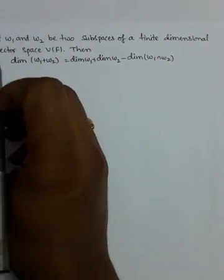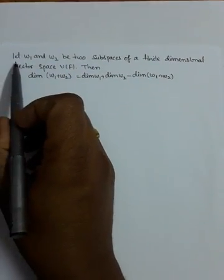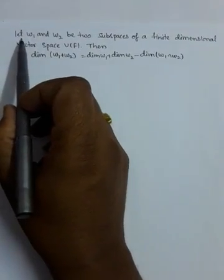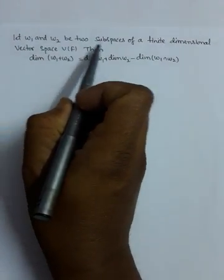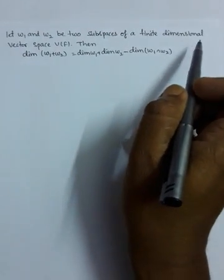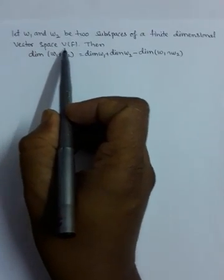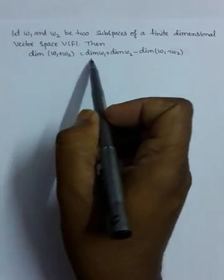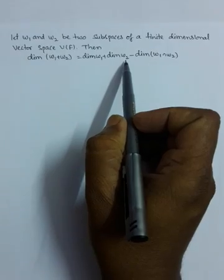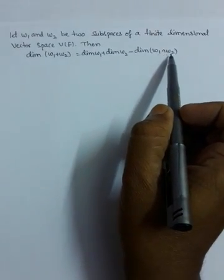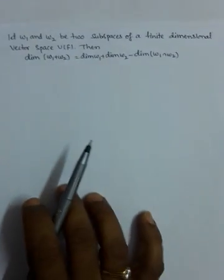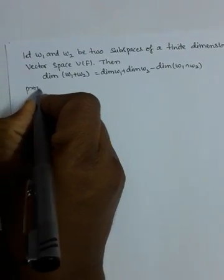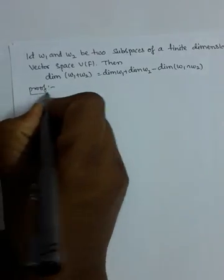Hello, good morning everybody. Now we will discuss one important theorem in basis and dimension. Let w1 and w2 be two subspaces of a finite dimensional vector space. Then dimension of w1 plus w2 equals dimension of w1 plus dimension of w2 minus dimension of w1 intersection w2. This is the theorem. Now what is the proof? It is one of the best and important theorems.